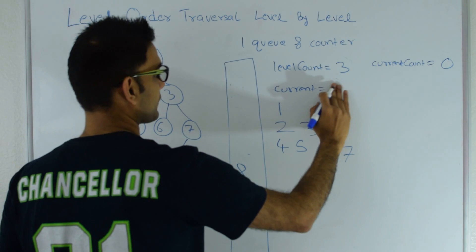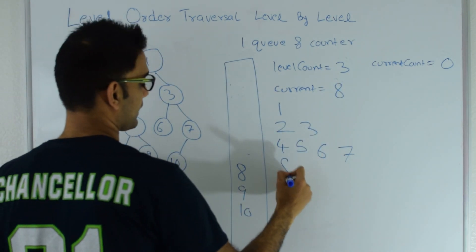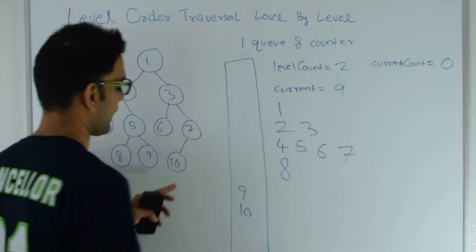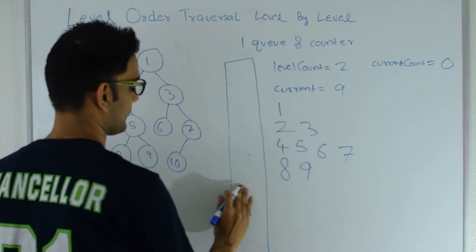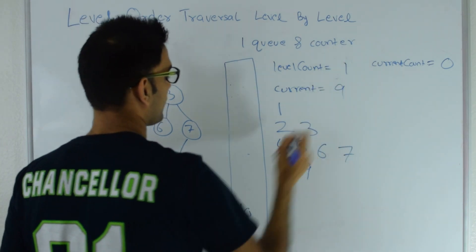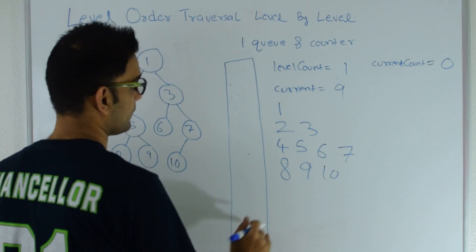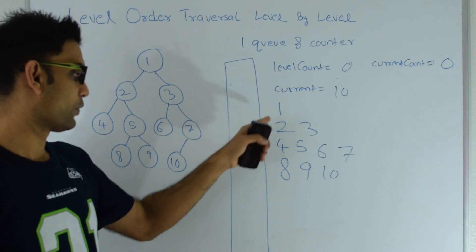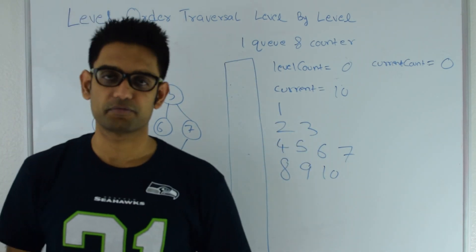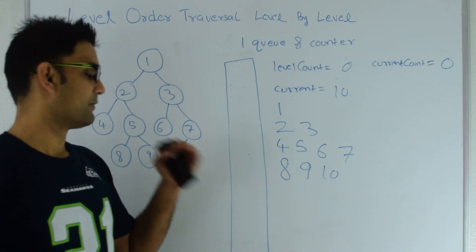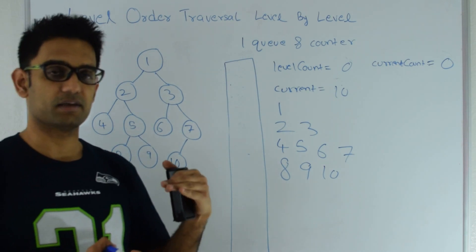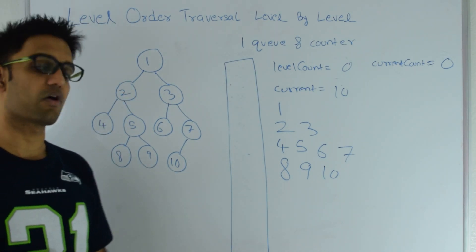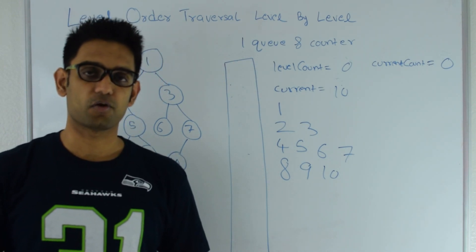I get 8 from the top of the queue — 8 doesn't have left or right child, I print 8 and decrement level count to 2. I pop again, current becomes 9 — 9 doesn't have left or right child, I print 9 and decrement level count to 1. Then 10 is out of the queue and level count becomes 0. As soon as the queue is empty I break out of the while loop. So the level count gives the count of how many elements are at that level, and the current count tracks how many elements are at the next level. The total time for this algorithm is O(n) and space complexity is also O(n).